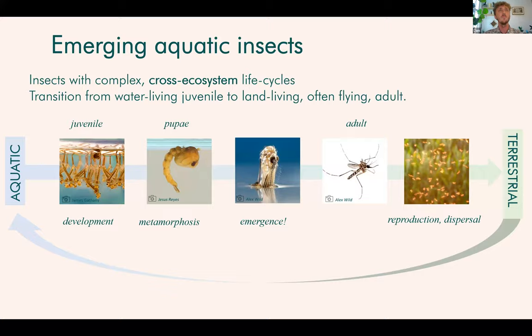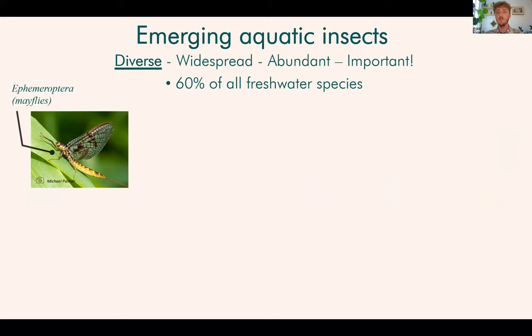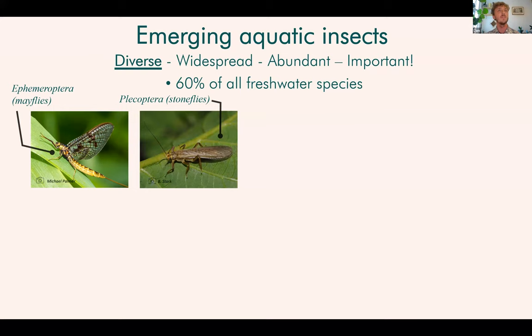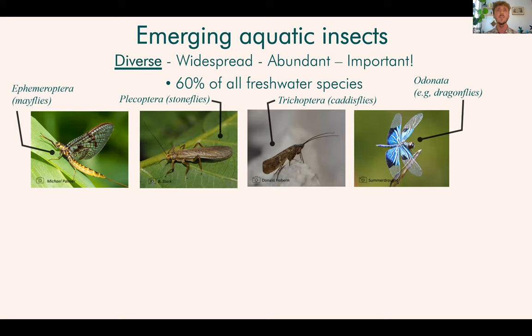Despite the apparent complexity of this, it's actually extremely widespread — emerging aquatic insects are highly diverse and comprise around 60% of all freshwater species. Perhaps they can be most symbolised by the mayfly, probably the best known group of insects that do this. They symbolise the short-lived adult phase in their group name, the Ephemeroptera. We also have the stoneflies and caddisflies, which are also typical emerging aquatic insects, and of course the Odonata, which includes dragonflies and damselflies.